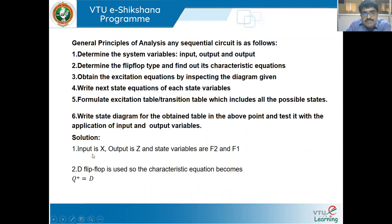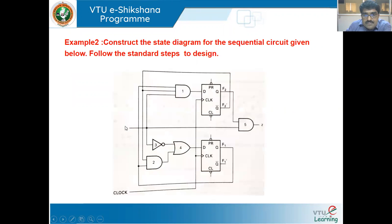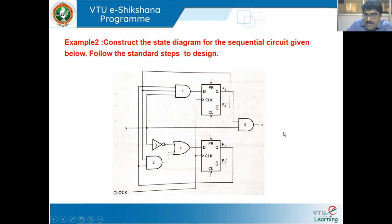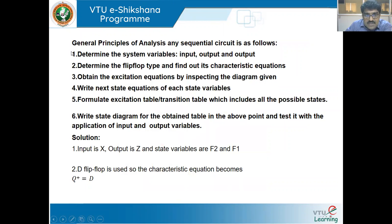Applying step one: we identify one input X, one output Z, and state variables F2 and F1, since we have two D flip-flops. One flip-flop output is F2 and the other is F1. So we have two state variables F1 and F2, one input X, and one output Z.